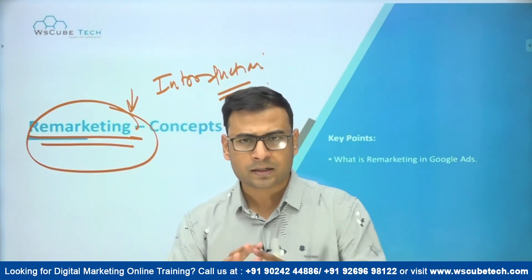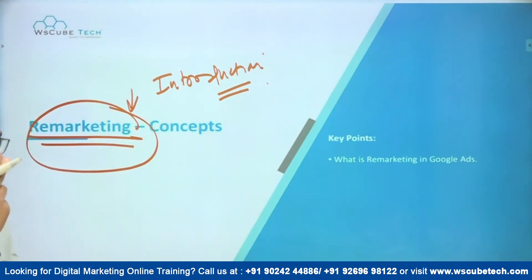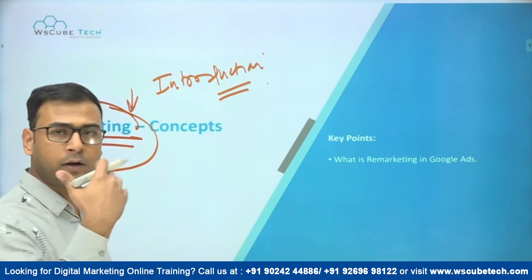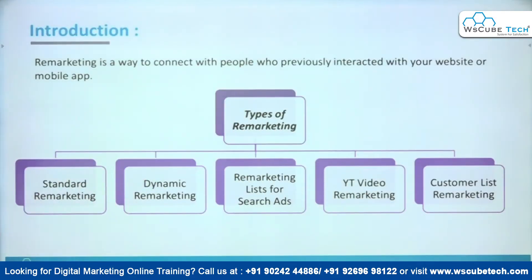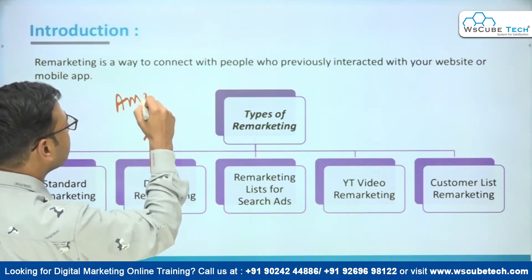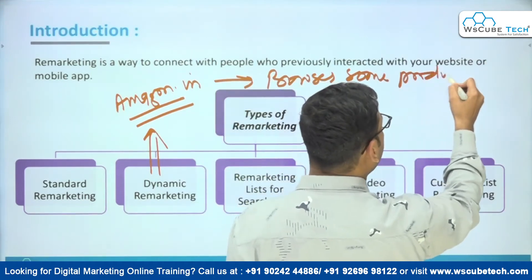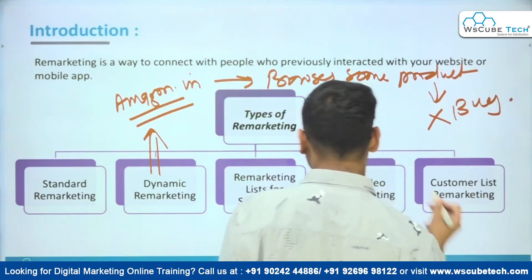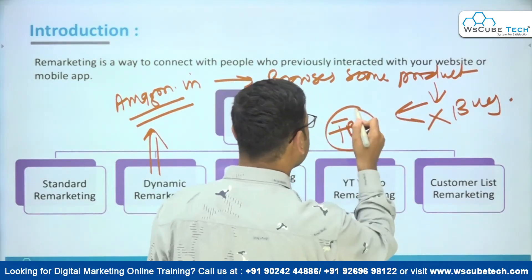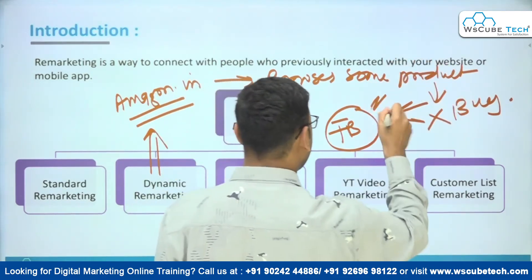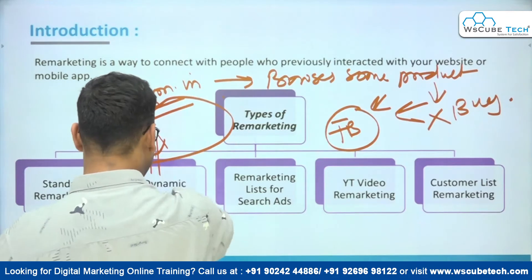That Amazon example is absolutely correct, but it is not the only thing that can be done with remarketing — there is a lot more potential. We will be discussing other types and other approaches of remarketing that we can do in Google Ads. The Amazon example specifically is called dynamic remarketing: you browse some products on Amazon but don't buy them, and then you see those same products on Facebook.